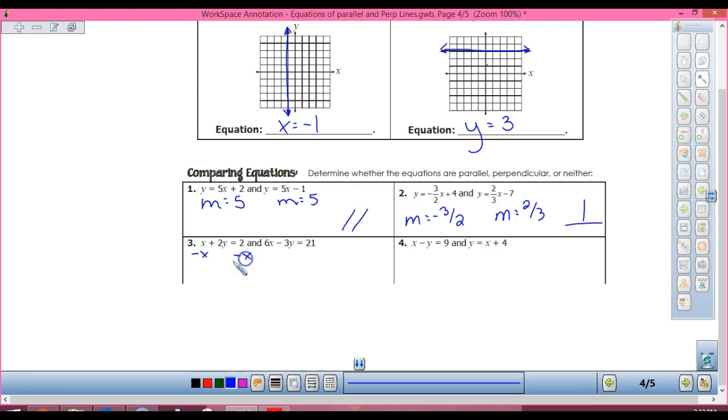So at number three, what do I have to do? Subtract x. So I have 2y equals negative x plus 2. Now what? I divide by two. Y equals negative one-half x plus one. What is my slope? Negative one-half.